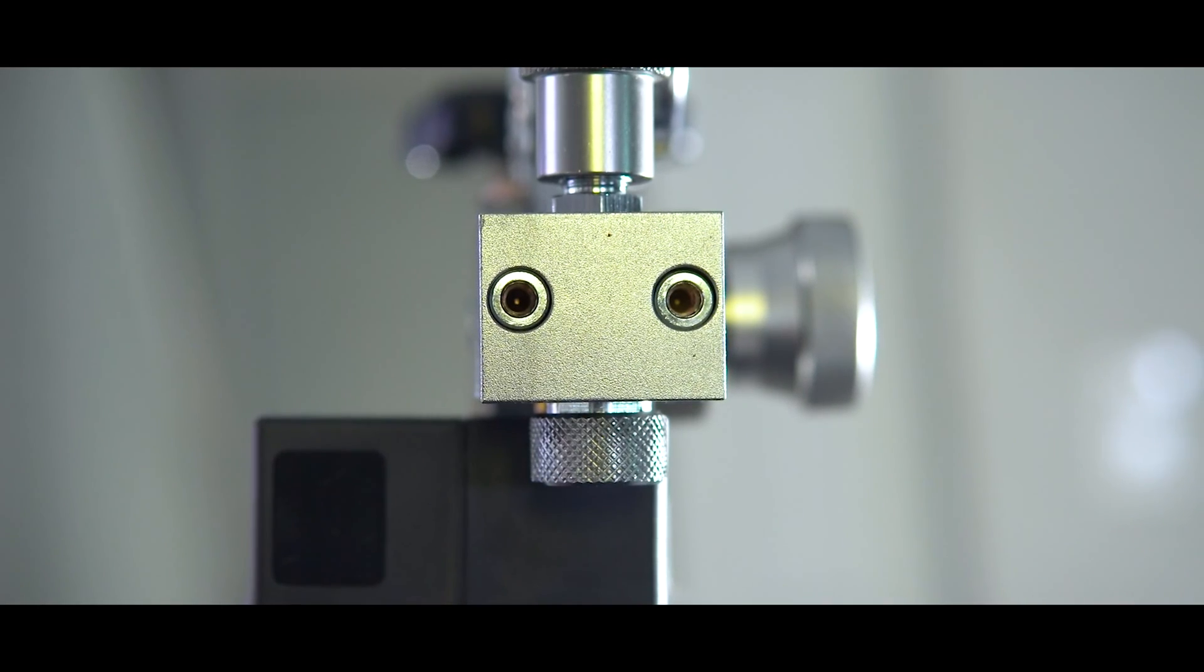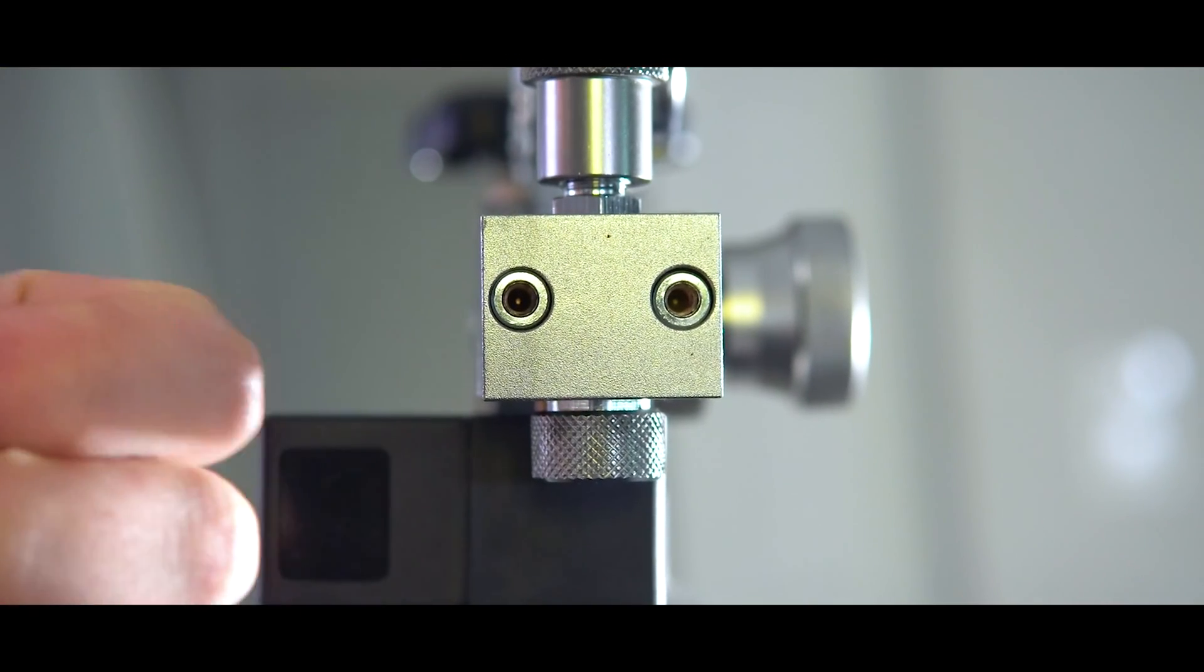However you set this up, just make sure that the end of your manifold uses the manifold block that doesn't have the center hole. If you use the one with the center hole, when you go to apply the pressure it's going to come out of that center hole. So just make sure you use the one that doesn't have the center hole at the end of the manifold block.